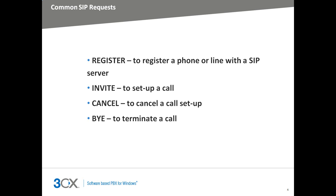SIP requests are sent out by phones and gateways to initiate some action. Here are some common SIP requests. A phone registers with a SIP proxy to let it know that it is ready to take calls and on which IP it can be reached. An invite is sent when a phone wishes to place a call — it's inviting the other party to accept the call. Cancel and BYE are appropriately used to terminate calls.